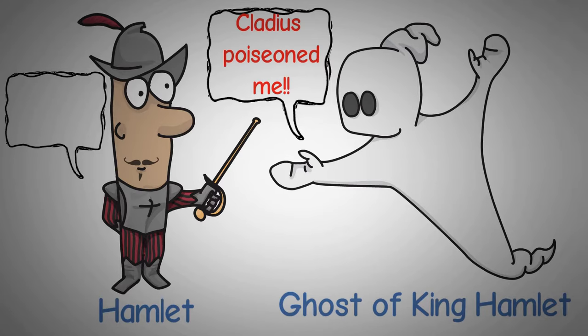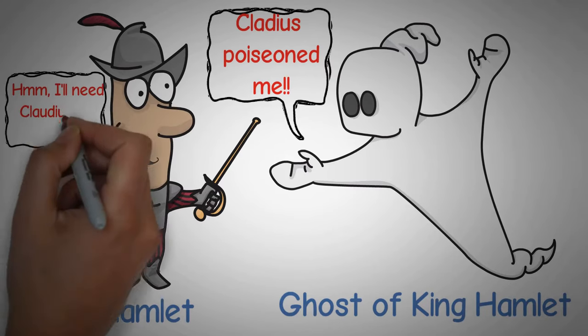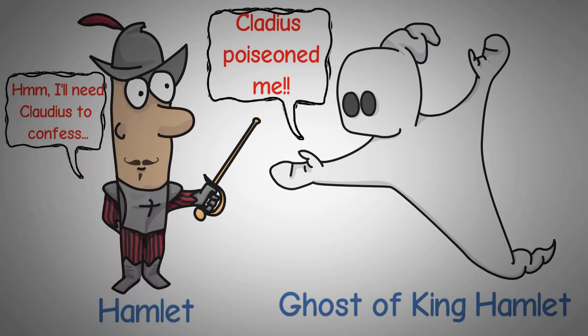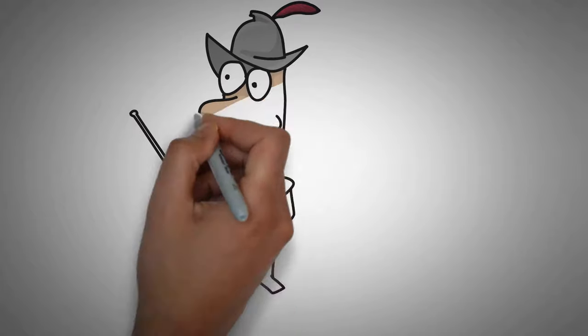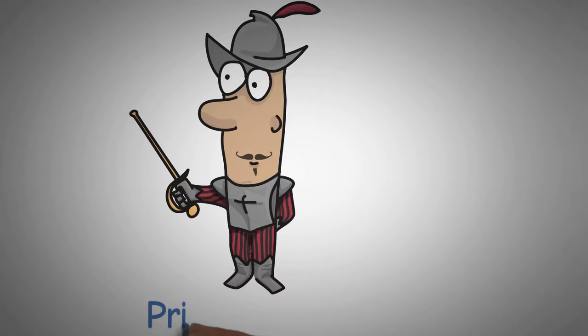Hamlet has been wooing Ophelia, the daughter of a courtier named Polonius, but suddenly spurns her. Claudius, Polonius, and a few of Hamlet's friends all spy on his actions trying to find out what's wrong with him, but they can draw no conclusions.